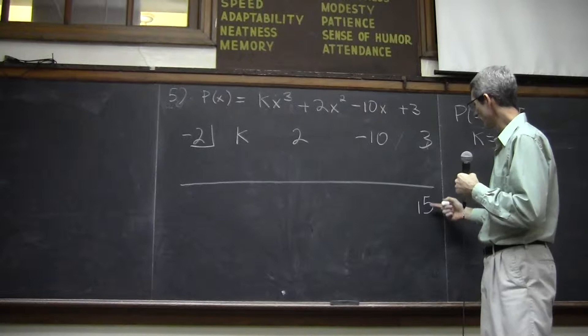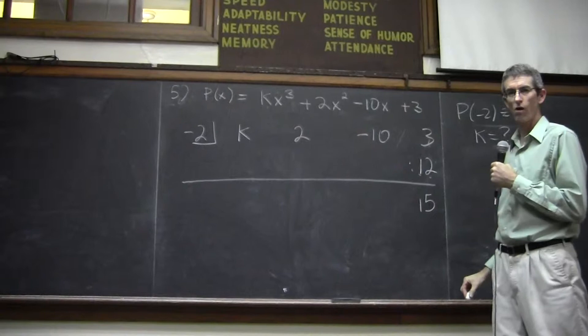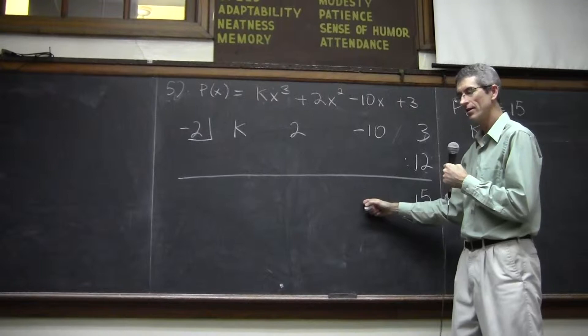So he said, well, what is this number right here? 3 plus what is 15? This has to be 12. Well, where does 12 come from? Remember, you take negative 2, you multiply it by this to get to 12. So negative 2 times negative 6 is 12. So far, so good.